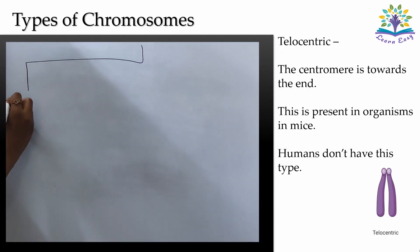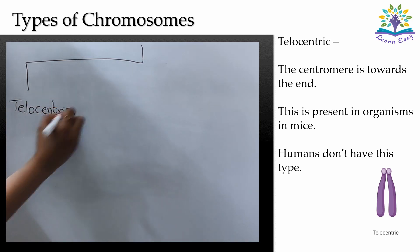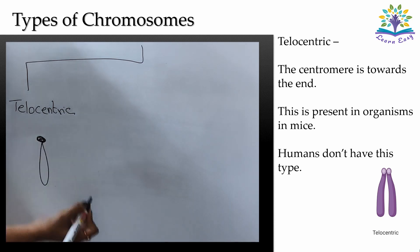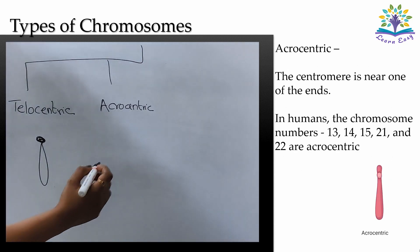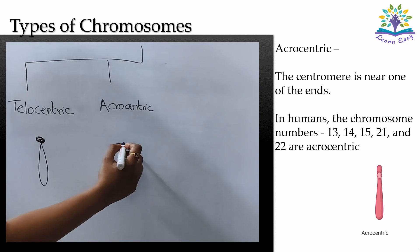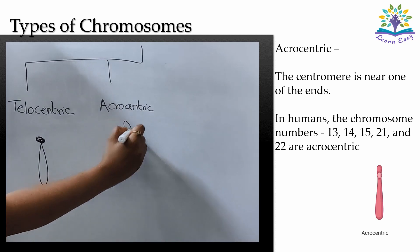Based on the position of the centromere, there are four types of chromosome. Telocentric is the one in which the centromere is at one end; the P arm is not visible or sometimes barely visible. This is present in organisms such as mice — humans don't have this type. The second type is acrocentric, where the centromere is near one of the ends; the P arm is visible but shorter than the Q arm.